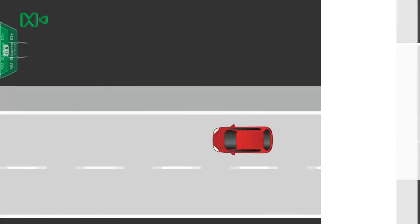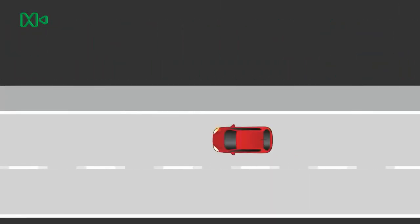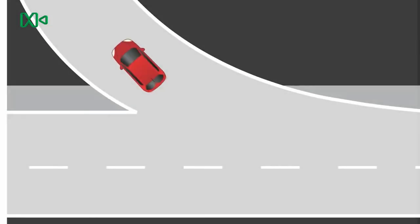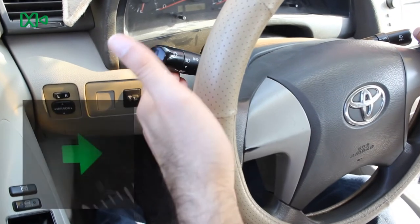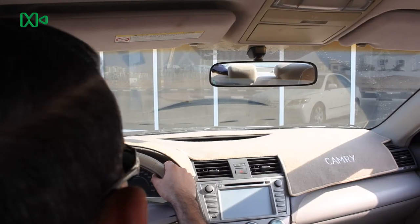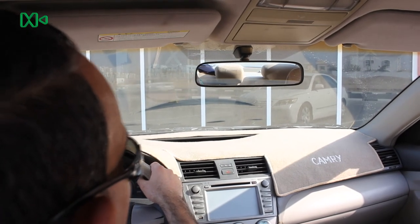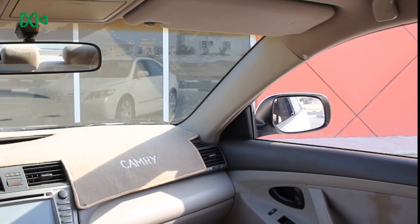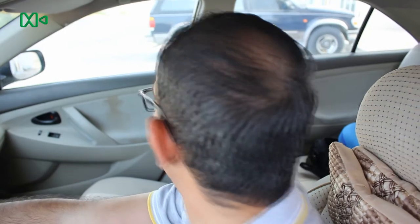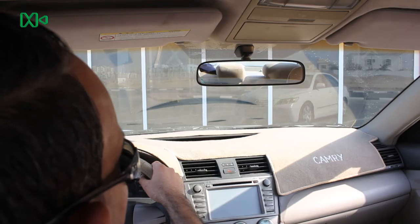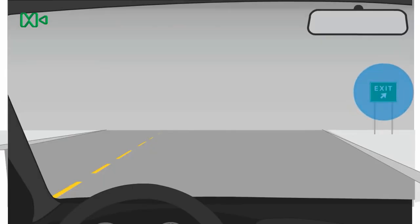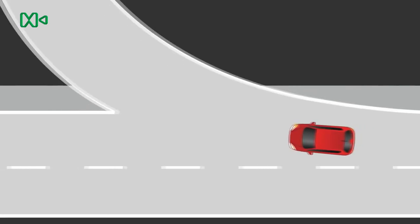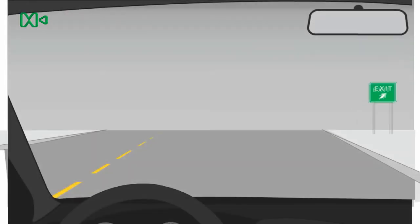Steps to exit the highway: first, give a signal to the right; second, decrease the speed; third, look at the internal mirror; fourth, look at the right side mirror — note a bicycle driver may pass through the space between the car and the sidewalk; fifth, look above the right shoulder; sixth, look at the internal mirror again; seventh, exit if it's safe to do so. The vehicle must not move before completing all previous checks.